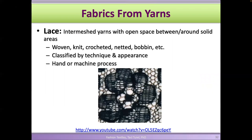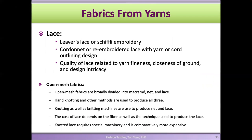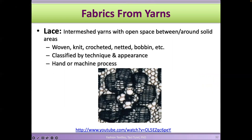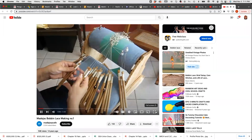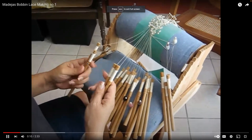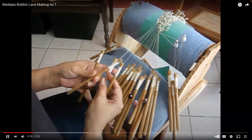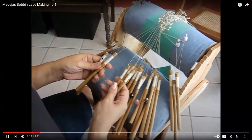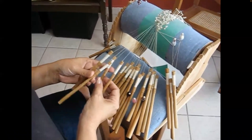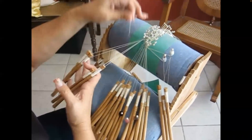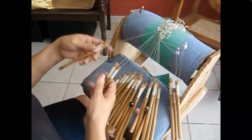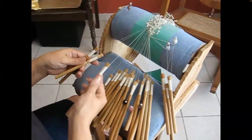Another fabric you can make from yarns is lace. Lace materials are usually inter-meshed yarns with a lot of open spaces. They can be woven, knit, or crocheted, and can be made by hand or by machine. Bobbin lace, for example, is done by hand using pillows — you pin your yarns, twist them, and create the structure. It's a long process requiring a lot of patience.